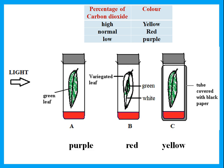In tube B with a variegated leaf — part green doing photosynthesis, part white doing only respiration — the carbon dioxide taken in by the green part is balanced by the carbon dioxide given out by the white part, so the amount of carbon dioxide stays normal and the solution remains red. In tube C, a green leaf covered with black paper has no light, so it does only respiration, giving carbon dioxide to the air — high carbon dioxide means the solution turns yellow.